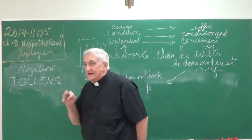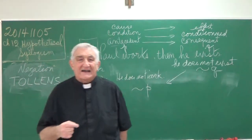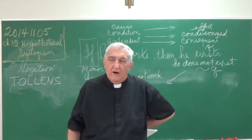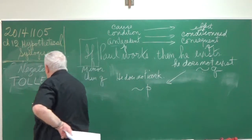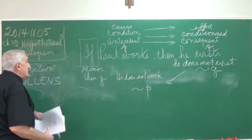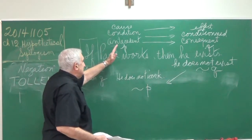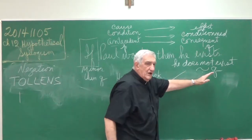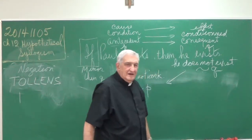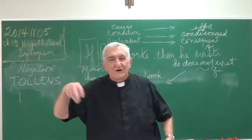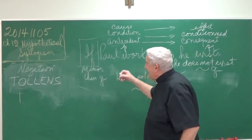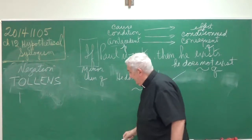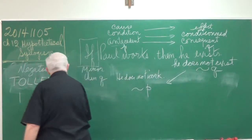So there are only two modes that are valid in hypothetical syllogism: ponens and tollens. Affirming the cause, or the antecedent, or the condition; or denying the consequent. Now we will try the two other possibilities. Those are the valid forms — the other two are invalid. But let us prove that they are invalid.